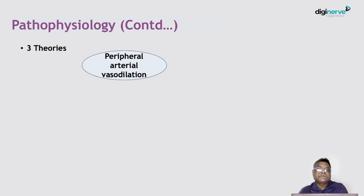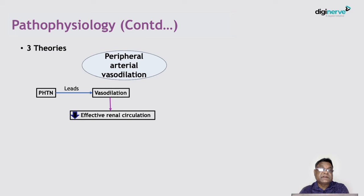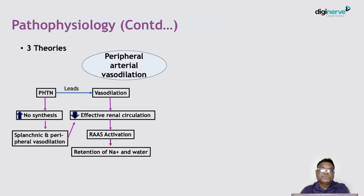The third mechanism is peripheral arterial vasodilatation. Portal hypertension leads to predominantly splanchnic arterial vasodilatation and also some generalized vasodilatation, resulting in reduction of effective renal circulation. Portal hypertension also stimulates more release of nitric oxide synthase; nitric oxide being a vasodilator causes dilatation of splanchnic and peripheral vessels. This ultimately reduces effective renal circulation, activates the RAAS system, causing further retention of sodium and water, and leads to peritoneal fluid collection.